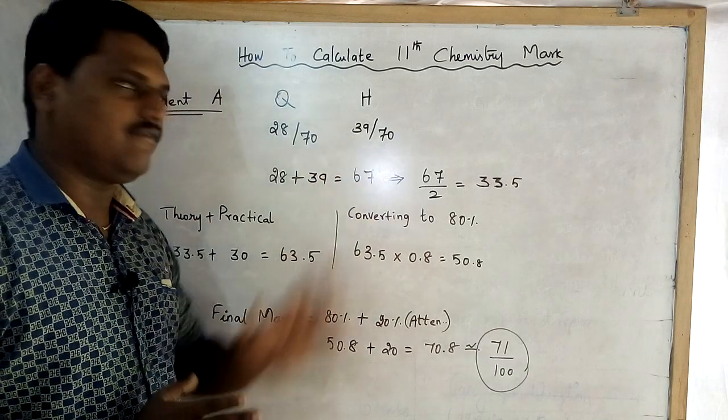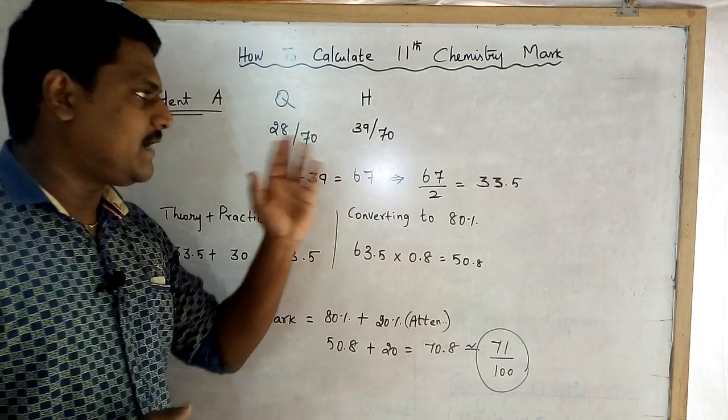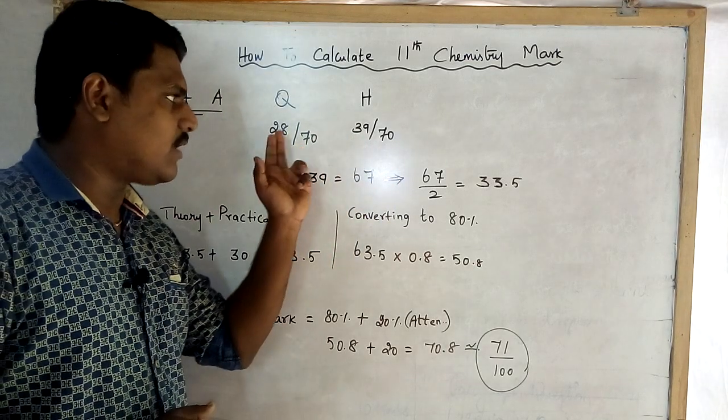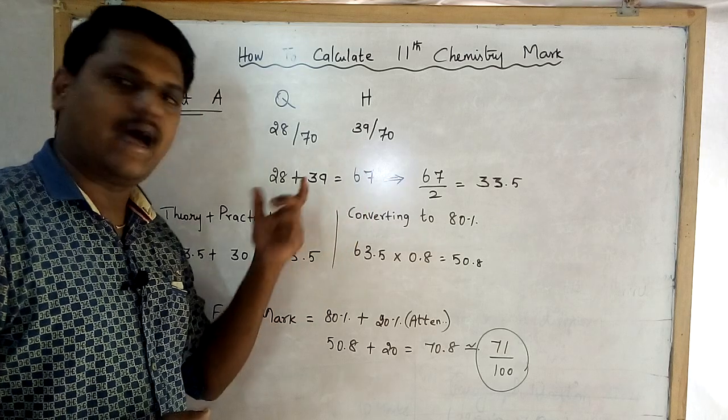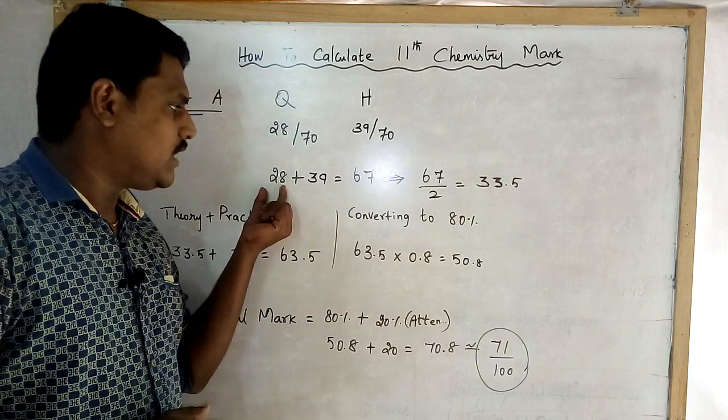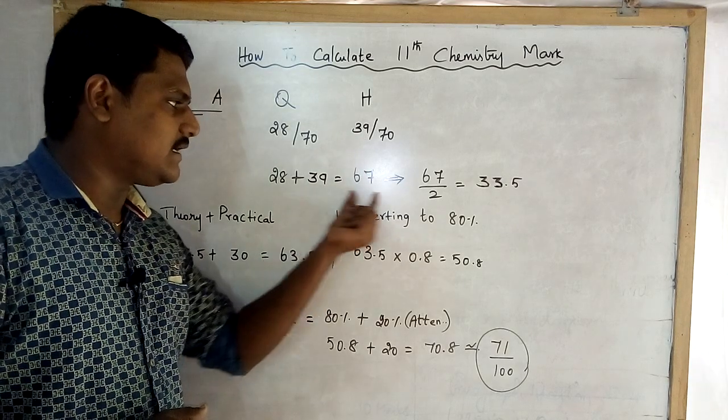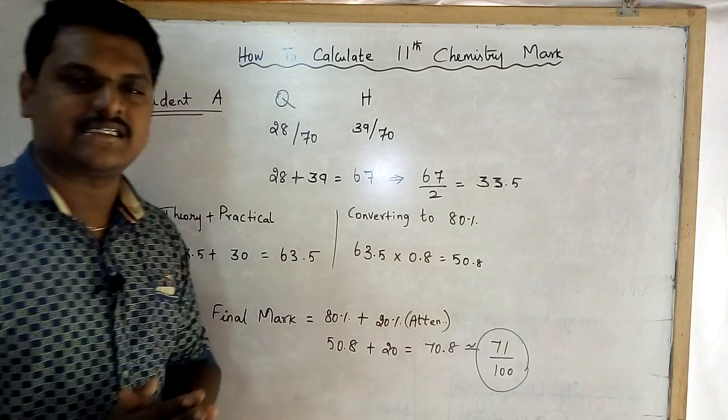Quarterly and half-yearly marks are combined. 28 plus 39 is equal to 67. How do you calculate this?